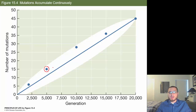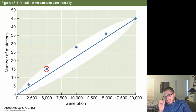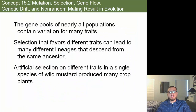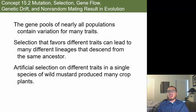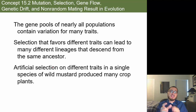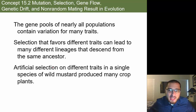No one is saying evolution was a quick process — it's minor changes over a long period of time that accumulate. The gene pool of nearly all populations contains variation for many traits. Selection that favors different traits can lead to many different lineages descending from the same ancestor. As the environment puts pressure on traits, it influences which ones stay around and which get weeded out — and that's natural selection.